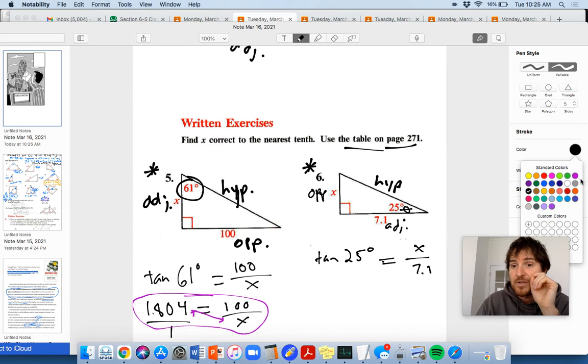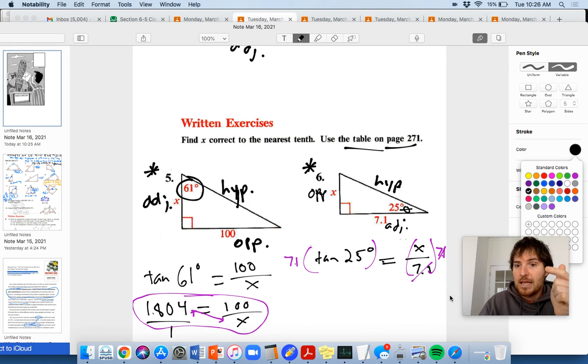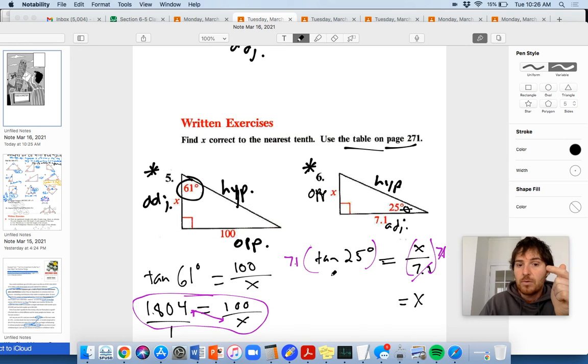So what I'll do is I'll actually, if I want to isolate X here, X is being divided by 7.1, right? Whatever X is divided by 7.1 equals that special ratio, the tangent 25 degrees. So if I just multiply both sides by 7.1, right? I cancel out that dividing and I end up with getting X over here equal to 7.1 times the tangent of 25.